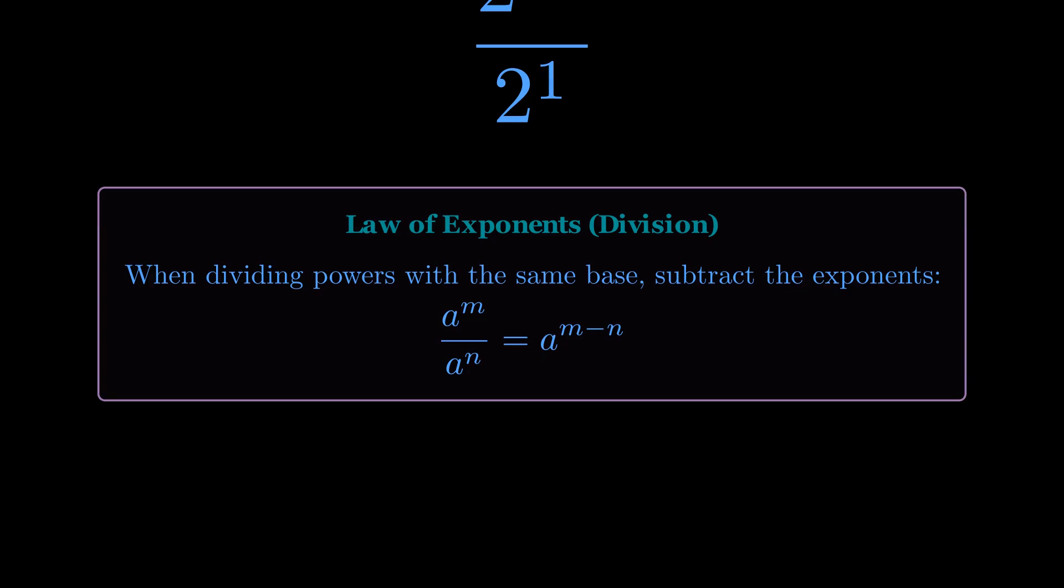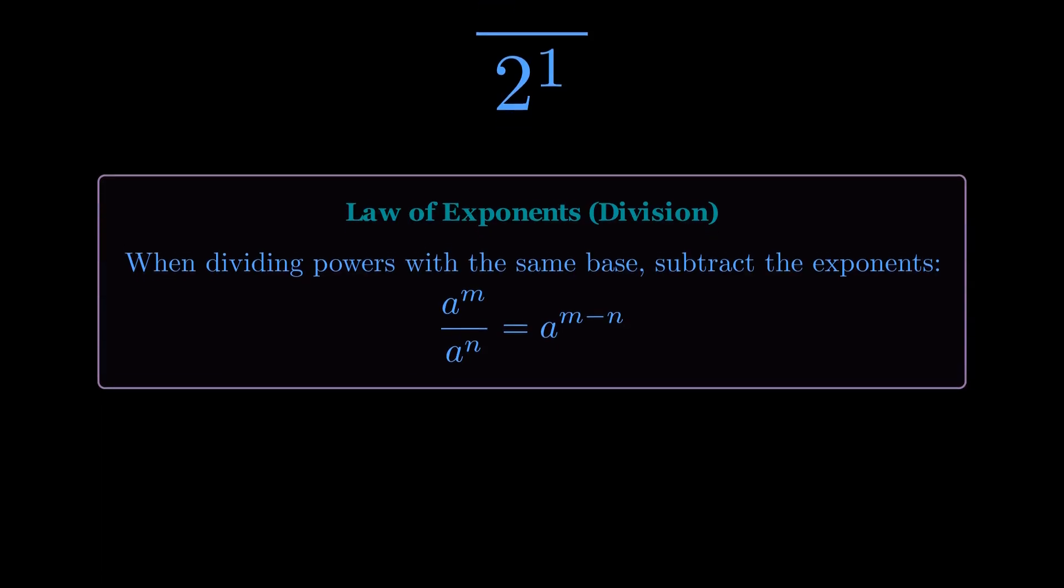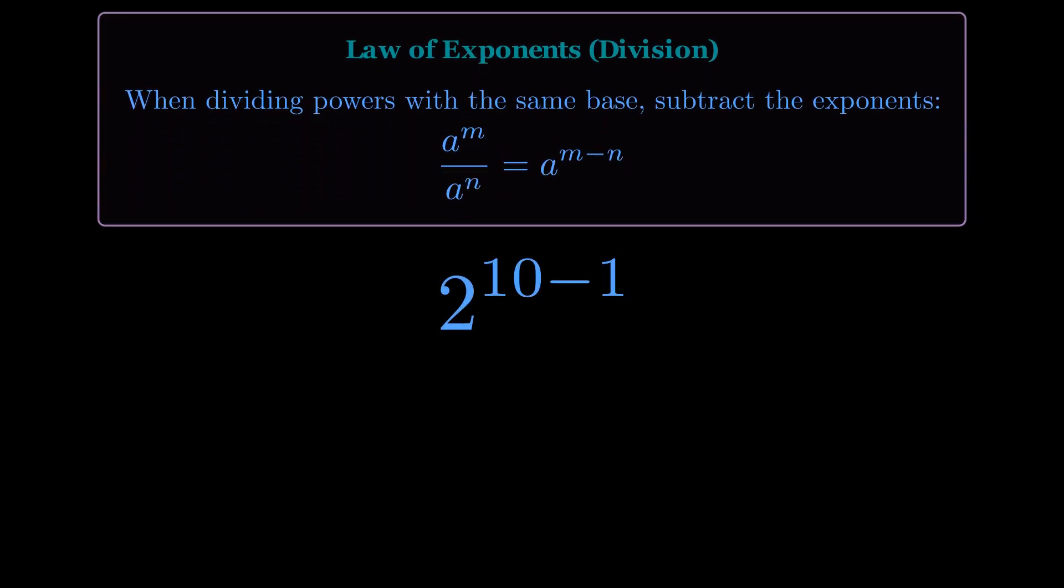So for our problem, we keep the base 2 and we subtract the exponent in the denominator, which is 1, from the exponent in the numerator, which is 10. This gives us 2 to the power of 10 minus 1, and 10 minus 1 is simply 9. So half of 2 to the power of 10 is 2 to the power of 9.